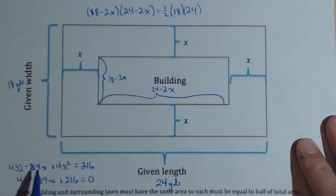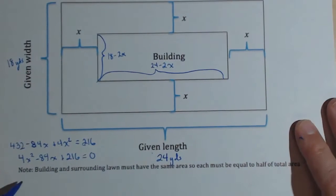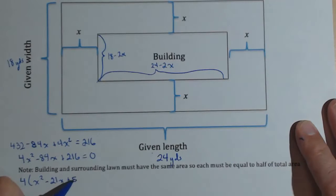And I can factor a 4 out of there. So X squared minus 21X plus 54 equals 0. And now this quadratic, we can put into our quadratic formula.